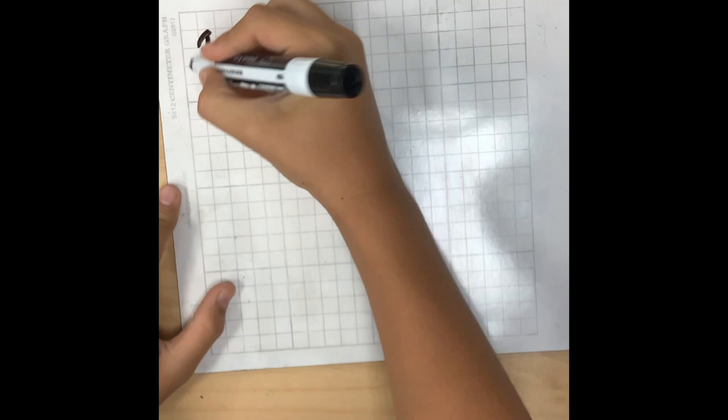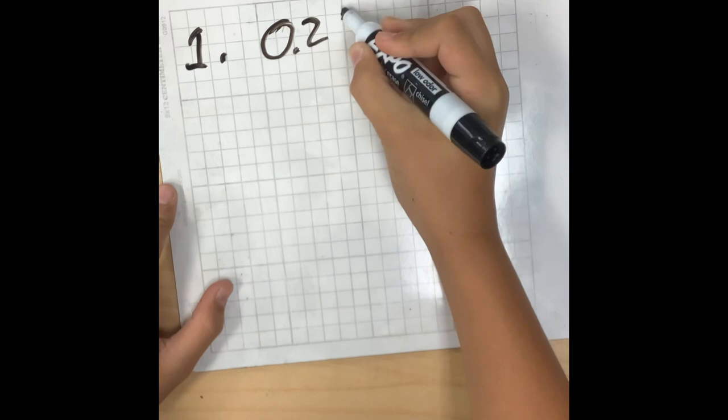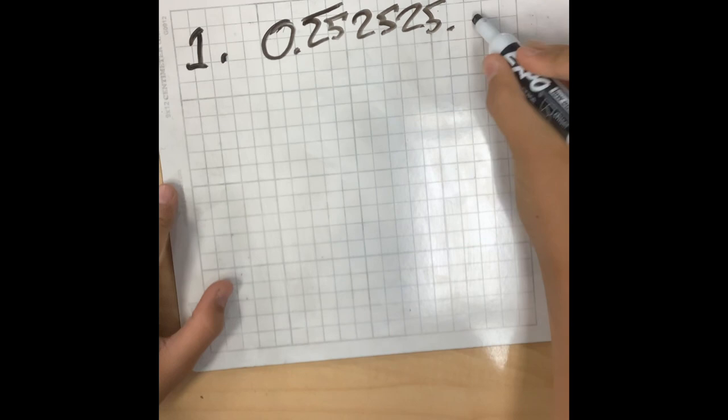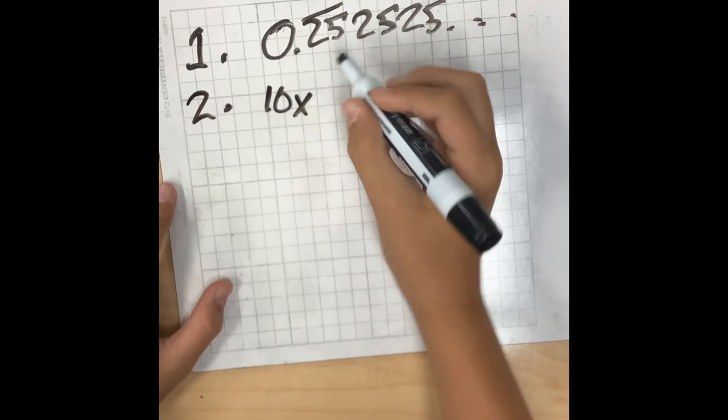Step number two. You write down 0.25 repeating. Then on step two.